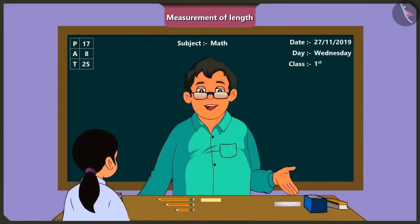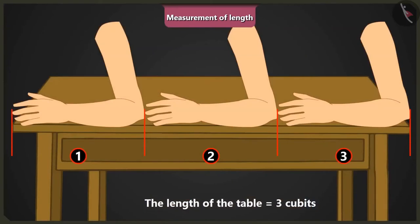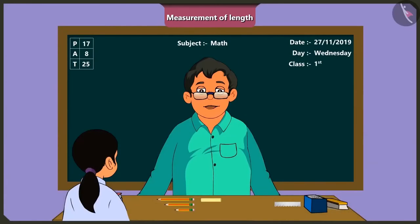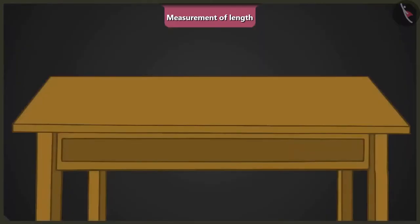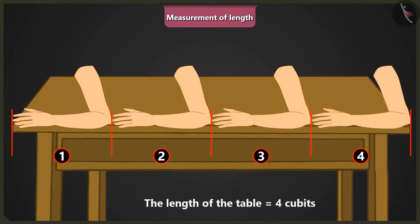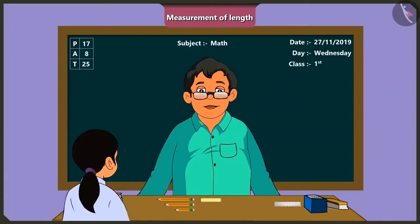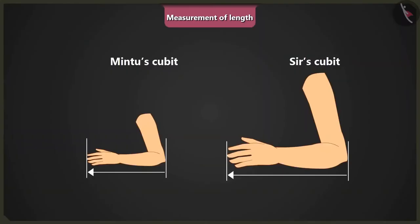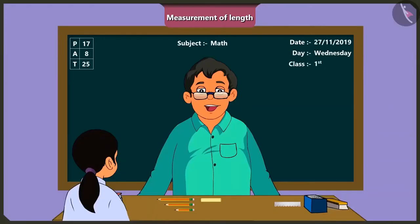Now look at the length of this table. It is equal to three cubits of my arm. Mintu, now you tell me, how long is this table when you measure it with your arm? The length of this table is 1, 2, 3 and 4 cubits of my arm. Can you tell me why this happened? Because the length of my arm is shorter than the length of your arm. Well done, Mintu.